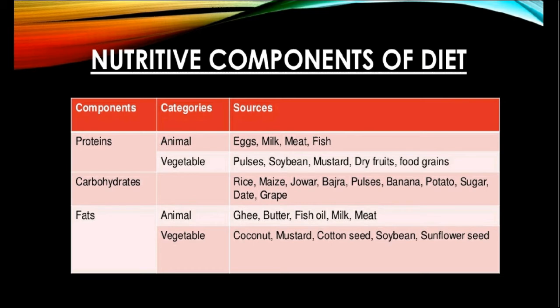Similar to protein, fats are also divided into two types: animal sources and vegetable sources. Animal sources of fat include ghee, butter, cheese, curd, fish, milk, meat and eggs. Vegetable sources include sweet potato, whole corn, dry fruits, coconut, soya bean, food grains, mustard oil, cotton seeds etc.